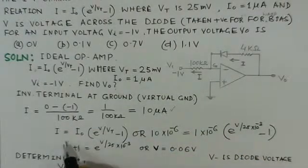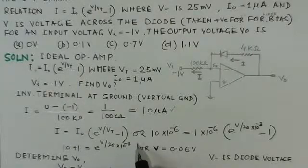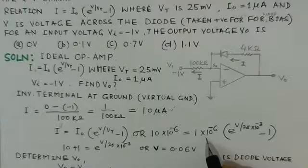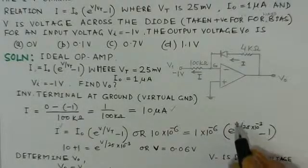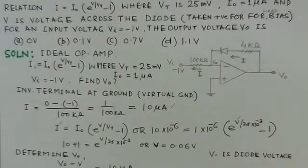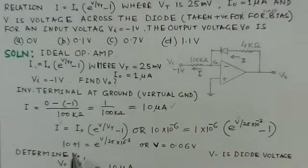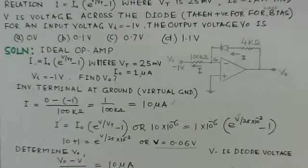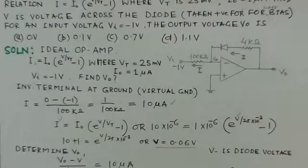Using the diode equation I equals I-naught times e to the power V over Vt minus 1, we substitute the value of 10 micro amperes for I. With I-naught given, we solve for V — the diode voltage — which comes out to be 0.06 volts.